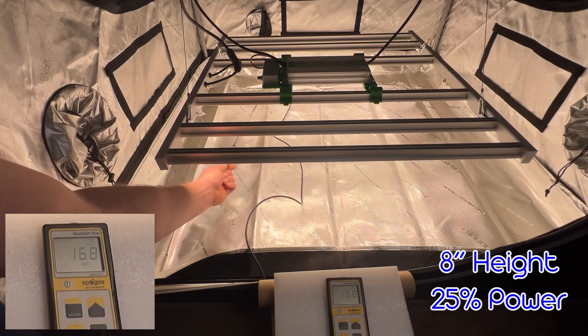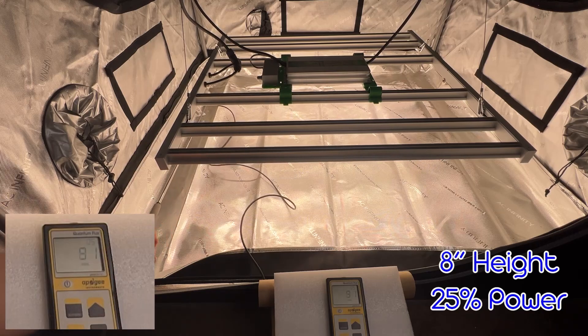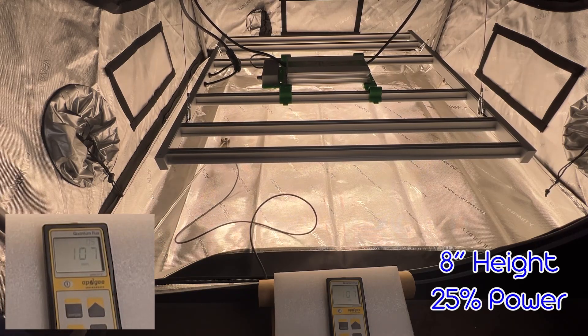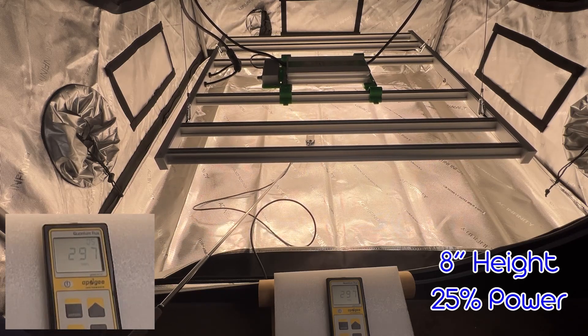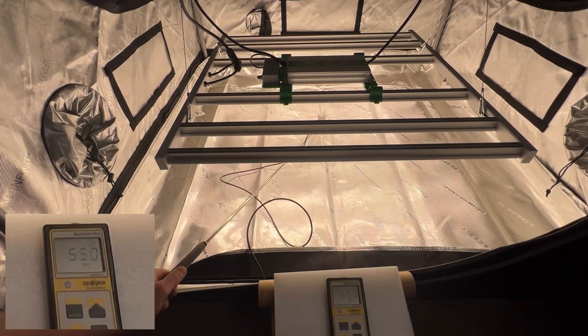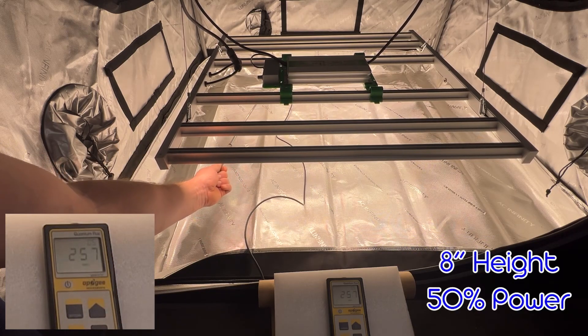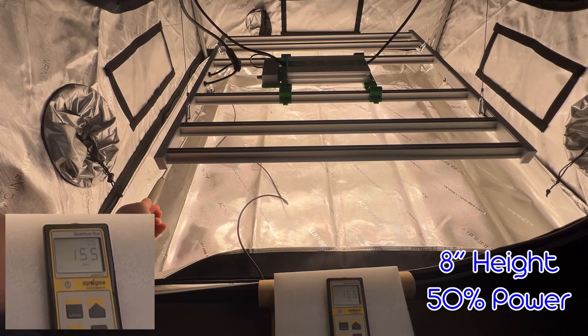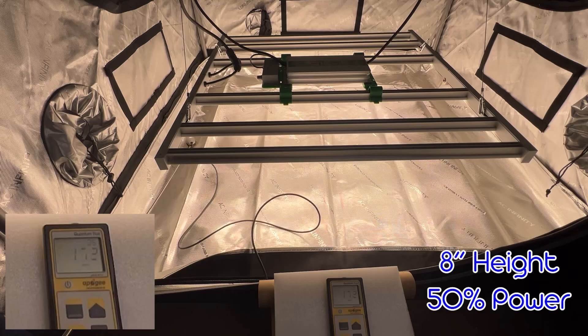So the two heights that I did my tests at were recommended by Mars Hydro themselves, which we are going to start with our 8 inch hanging height at 25% power. You see lower numbers around 90 to 200 to 300 depending on where you're looking. And just a little disclaimer, I did speed up this footage a little bit, so I am getting good readings. It's just faster because I know you guys don't just want to sit there all day and watch me move my little wand around, but I appreciate you watching.